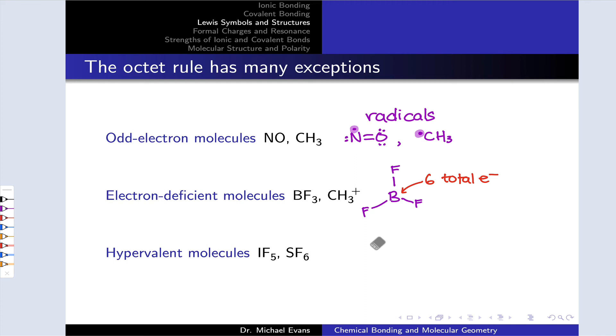The last class, which in some ways is the largest, is hypervalent molecules. IF5 and SF6 are two examples. Here we have the iodine and the sulfur at the center and five and six fluorines surrounding that central atom, indicating that we've got more than eight electrons around the central atom.